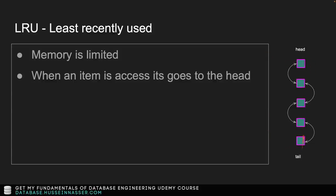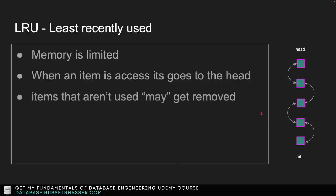Every time you access an item, it goes back to the head. Items that are not used will automatically be pushed down to the tail. When memory is nearly full, items at the tail will be removed. There's also an LRU crawler daemon that handles cache eviction from the tail. Every time it kicks something out, it has to acquire a lock — and when threads can't read, latency increases.